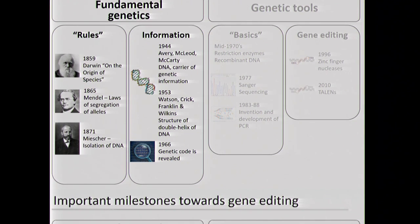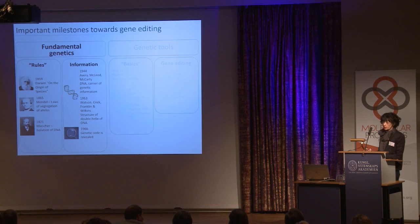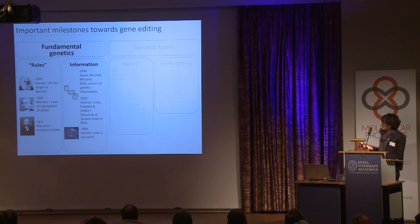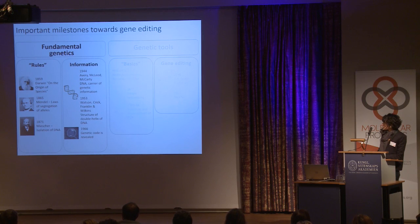Genetics is critical in laboratories for understanding functions of genes, and in the medical field for finding new targets for therapeutics. I would like to give you an idea of where CRISPR-Cas9 can be placed in the history of genetics toward gene editing. The 19th century was very critical for fundamental genetics: Darwin on the origin of species, Mendel on the segregation of alleles, and Friedrich Miescher who isolated DNA in 1871.